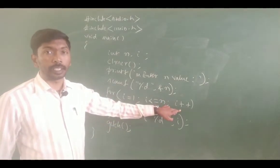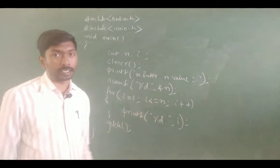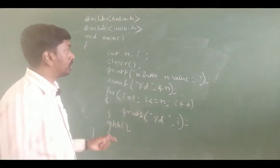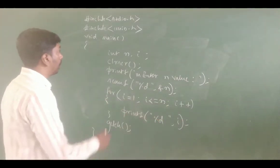With the while loop, initialization, condition, and increment or decrement are written on separate lines. But with the for loop we can write all the statements in a single line, which is easier.